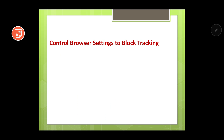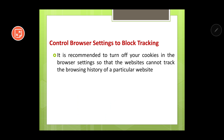The next point is to control browser settings to block tracking. In one of the previous parts of this chapter on cyber safety, we discussed cookies. Cookies generally track our activity online. It is recommended to turn off cookies in the browser settings so that websites cannot track the browsing history. You can go to the browser settings and disable the cookies — once disabled, those websites cannot track you.